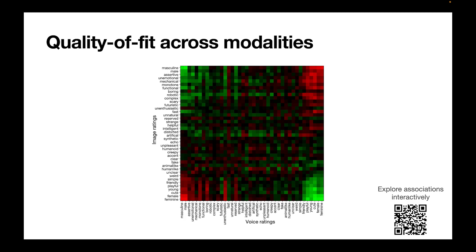We can also look at the individual correlations. So again, we see a male cluster where male voices are associated with assertive, unemotional, mechanical, and functional-looking robots.